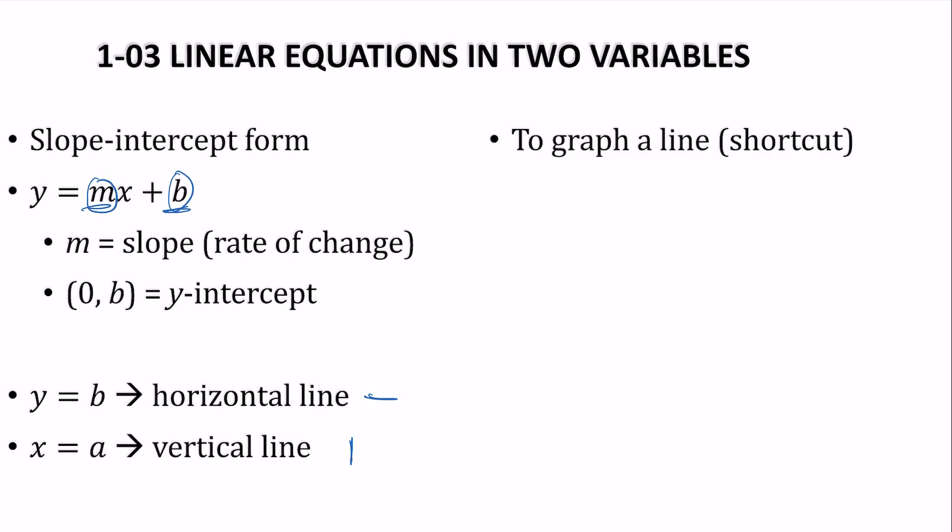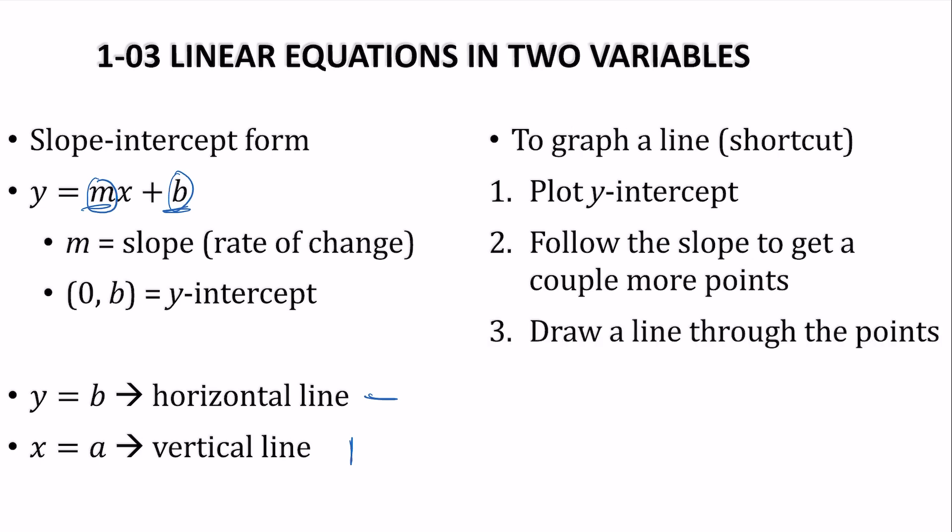To graph a line, the shortcut method is to plot your y-intercept first, if it's not horizontal or vertical, and follow the slope to get a couple more points. Then you draw a line through those points.